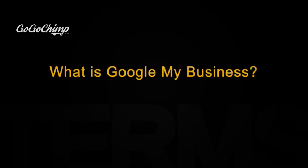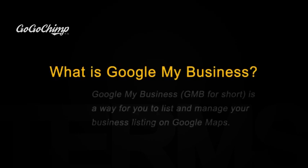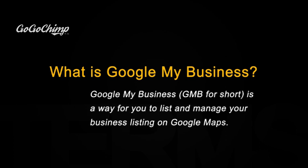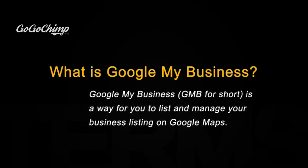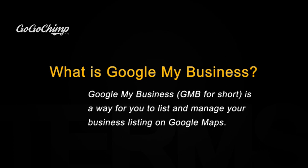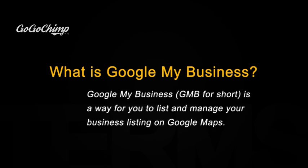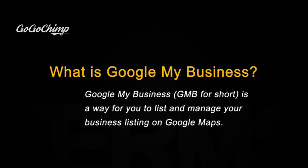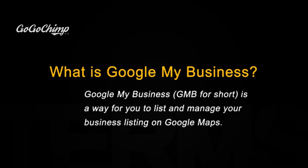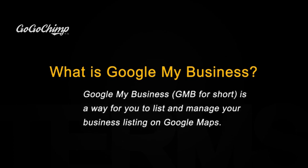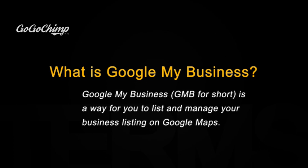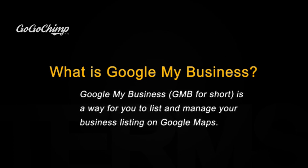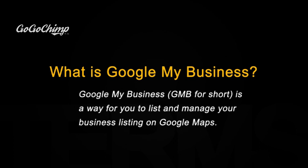Google My Business is a way for you to list your business on Google so that you can be found on Google Maps. Google Maps is one of Google's products that is a map, but more importantly businesses can be listed on it, meaning that if I'm searching for 'plumber' the map will pop up in Google search results and show three of the top ranking plumbers.